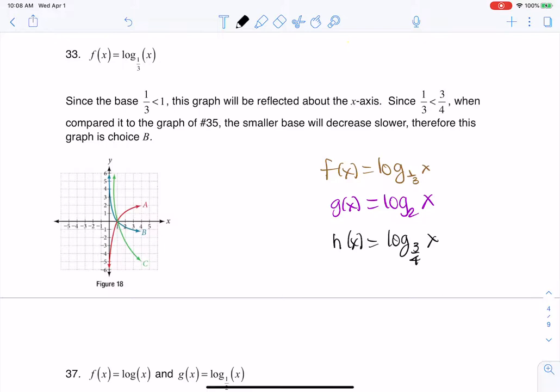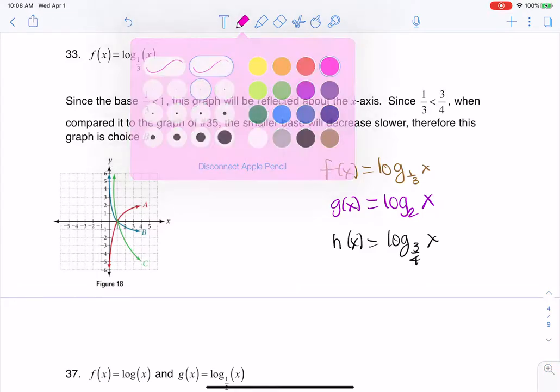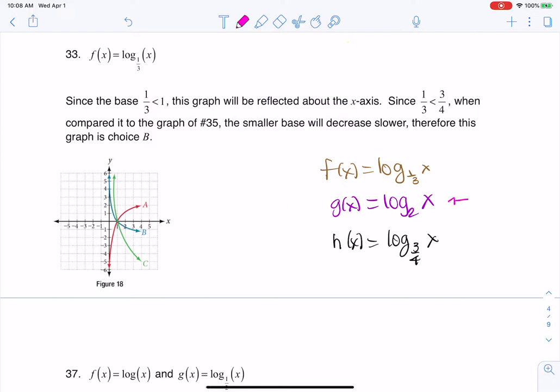So here we were asked to match up these equations with these graphs. The first thing that I would take note of in this problem is that this graph right here is the only one where the base is larger than 1. So this is going to look like a logarithmic growth graph, and that's why I can see over here on A, that's the only one that's growing. It's logarithmic growth, not logarithmic decay as we move from left to right.